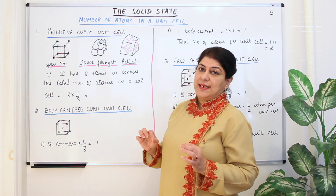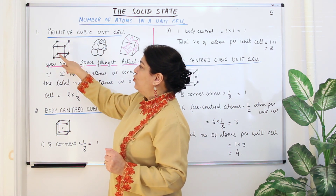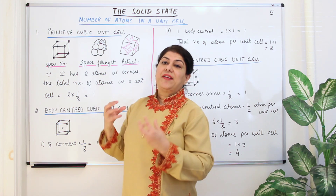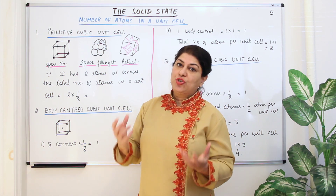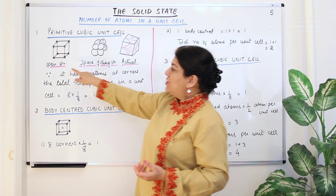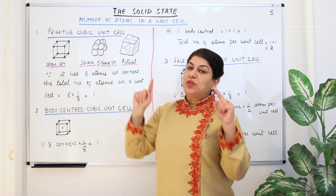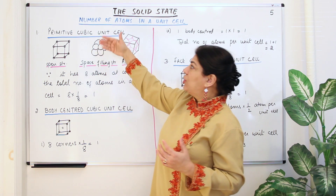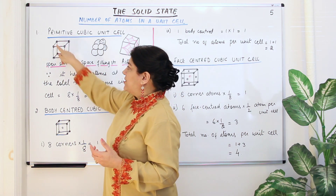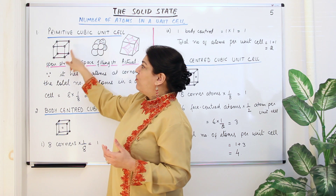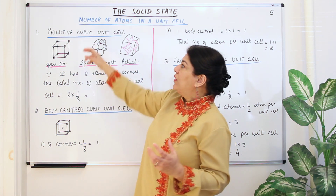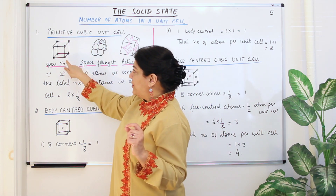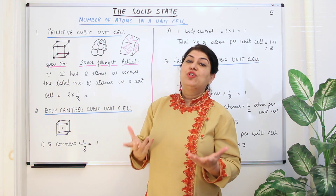The primitive cubic unit cell is a cube where each corner is represented by a lattice site occupied by an atom. There are three ways in which you can draw diagrams showing the different types of unit cells. The first is the open structure, where we draw imaginary lines between the centers of the atoms, and these lines give us the shape — for example, the cubic unit cell with eight atoms at the corners forming a cubic pattern.